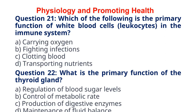Question 22. What is the primary function of the thyroid gland? A. Regulation of blood sugar levels. B. Control of metabolic rate. C. Production of digestive enzymes. D. Maintenance of fluid balance. The correct answer to question 22 is option B. Control of metabolic rate. Explanation: The thyroid gland produces hormones that regulate the body's metabolic rate, influencing energy production and utilisation.